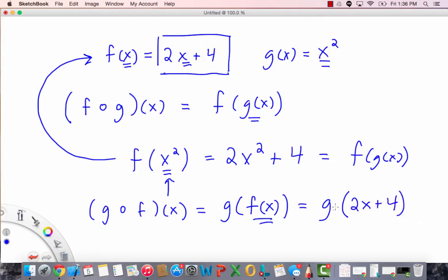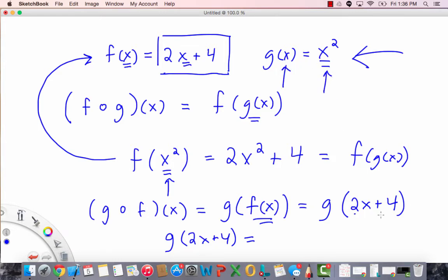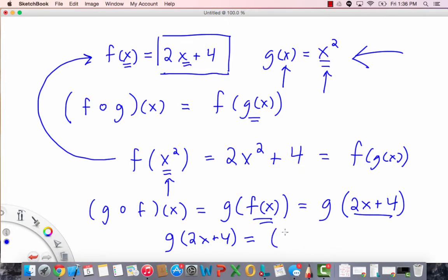Now, we go up here, and we write g of 2x plus 4 equals, wherever there's an x, here and here, we're going to replace it with 2x plus 4. So we have 2x plus 4 quantity squared. And that's the answer.